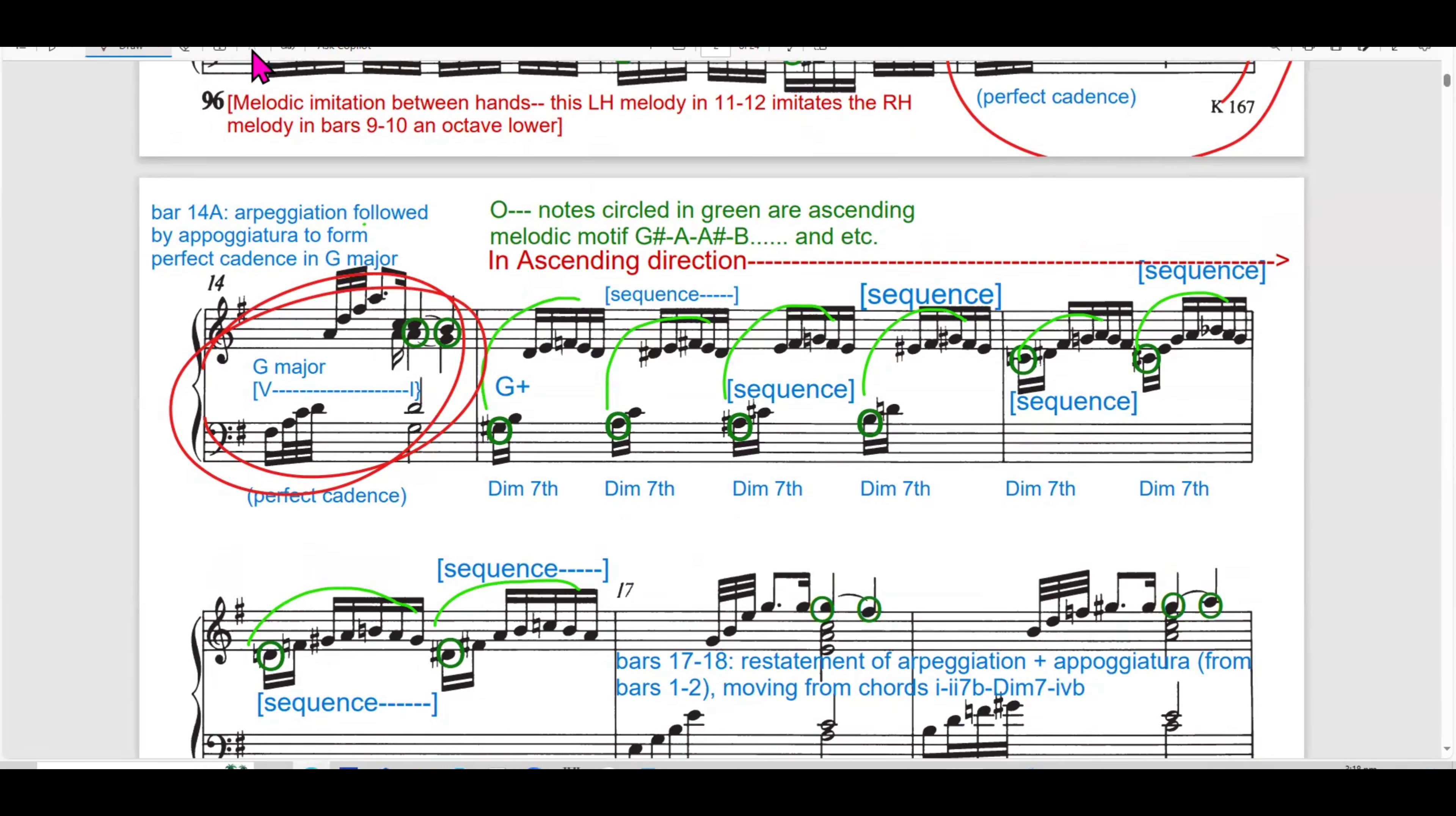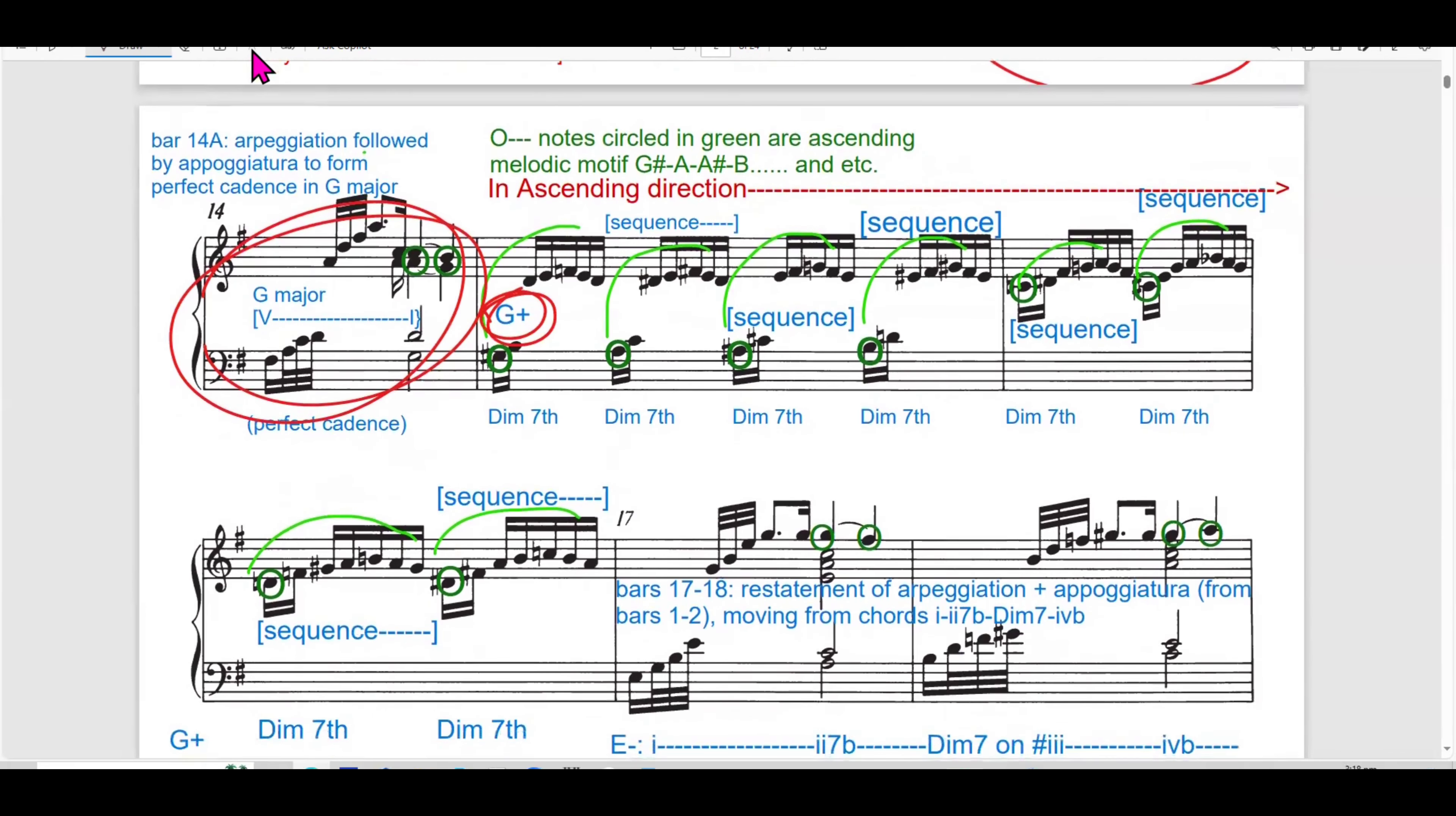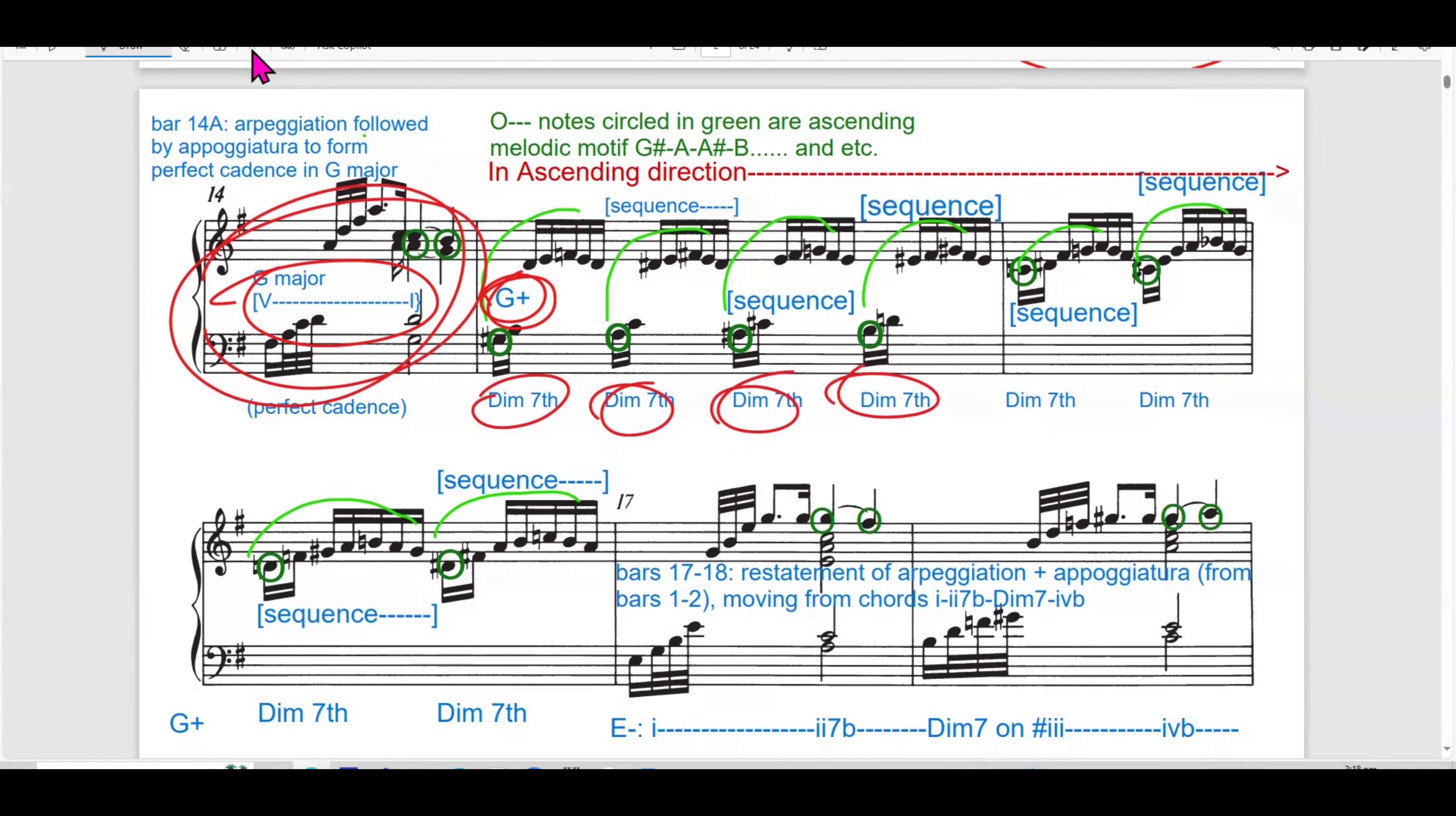So, the following section presents a bar-by-bar and phrase-by-phrase analysis, exploring the tonality change, harmonic progression and polyphonic texture. In bar 14 to 16, it modulates to G major and it has an ascending sequence. The arpeggiation followed by appoggiatura in bar 14 recalls the opening gesture from bar 1 to 2. So, this recalls the opening gesture in this Toccata.